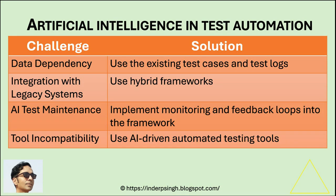Although there is a huge positive impact of AI on test automation, there are some common challenges too. Data Dependency: AI relies on large datasets to train models, which may be difficult to collect. A possible solution is to use existing test cases and test logs to train AI models — over time the data will increase, leading to more accurate predictions. Another challenge is integration with legacy systems. The solution is to use hybrid AI-driven test automation frameworks that allow gradual adoption of AI alongside manual processes for legacy systems.